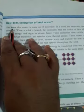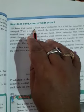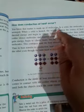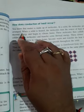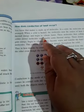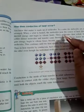How does conduction of heat occur? You know that matter is made up of molecules. In a solid, the molecules are closely packed. When a solid is heated, the molecules near the source of heat gain thermal energy and begin to vibrate faster.